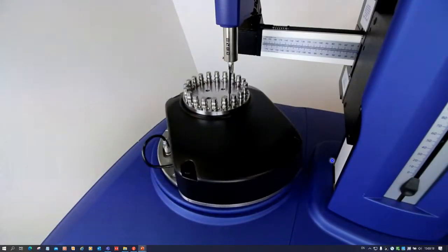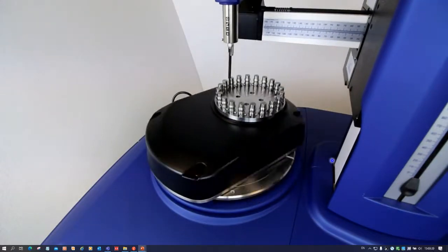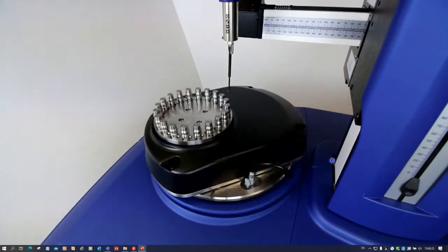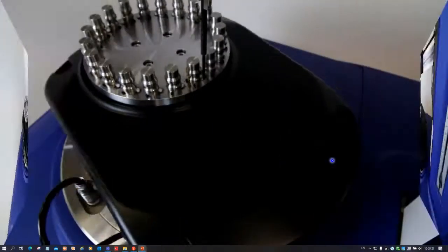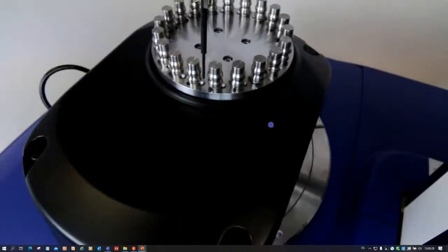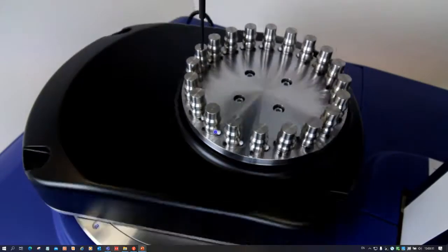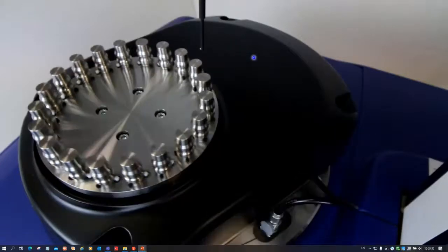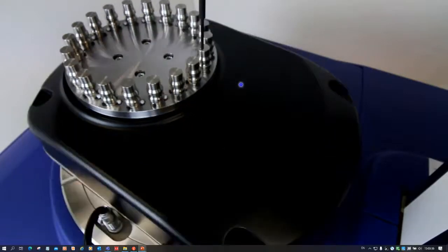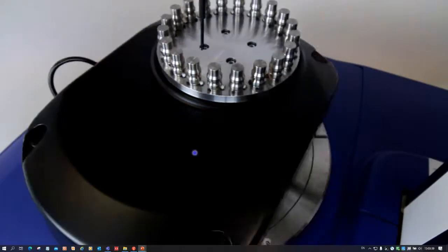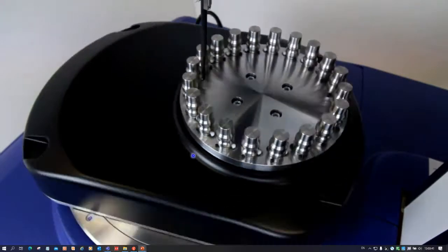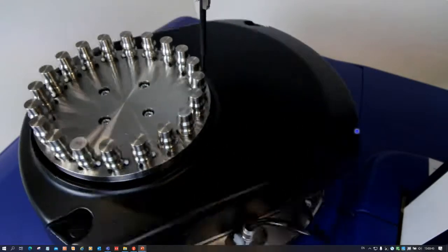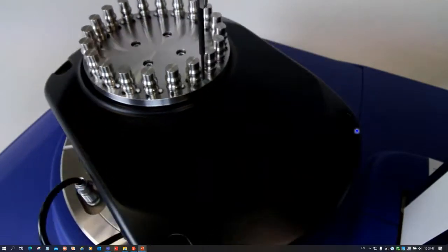So we're measuring the first sample there and then moving off, and you can see we're going to move to a different location. We've indexed round to the next part. One thing to note here is that the weight of this is offset but it is counterbalanced. There is a counterbalance inside here to make sure that the weight is balanced evenly about the spindle axis. So when we're measuring on the carousel there is no loss of accuracy, and we'll have a look at some of those results in a minute.